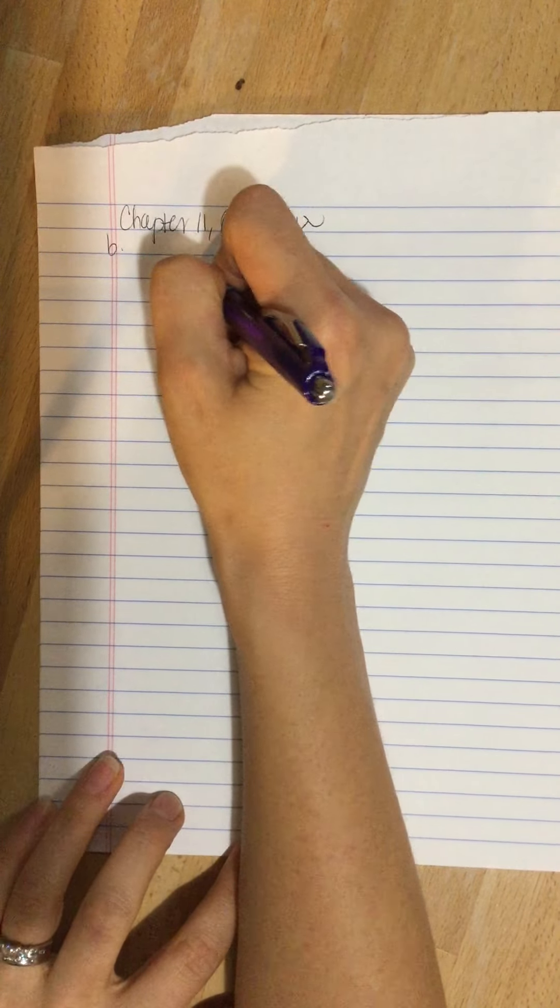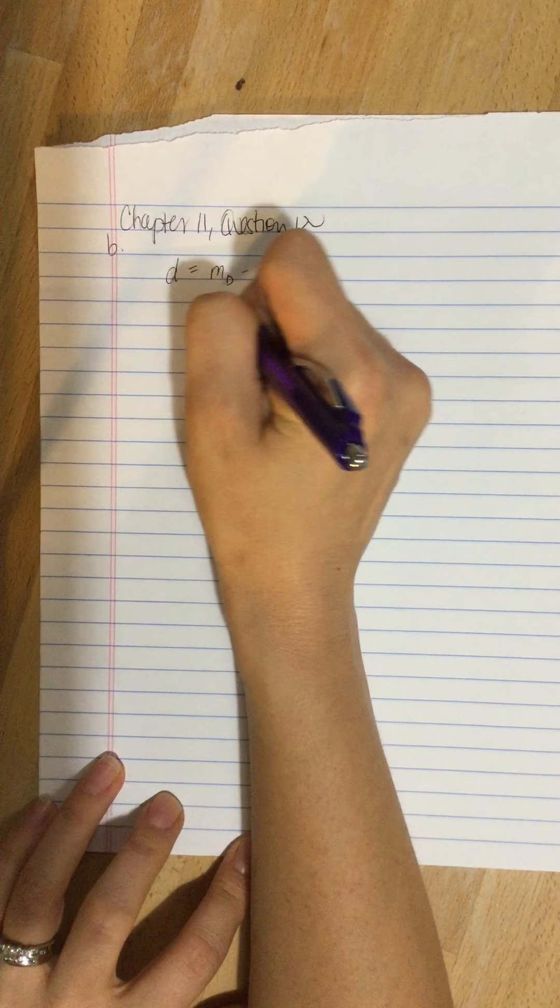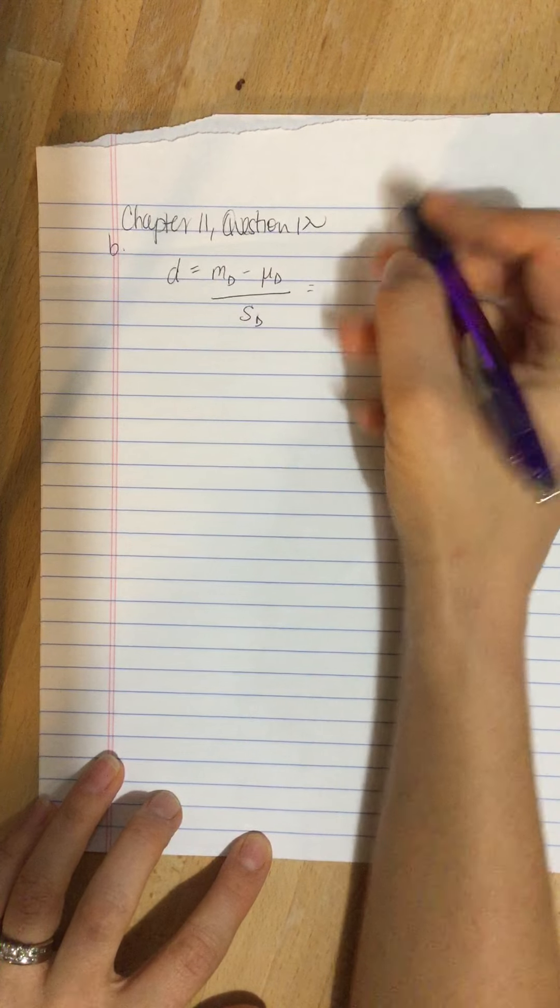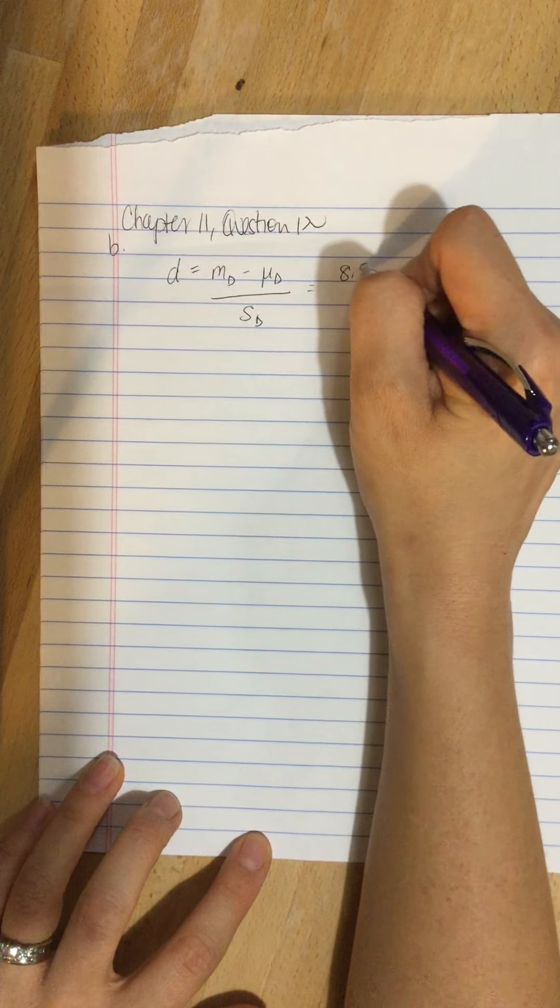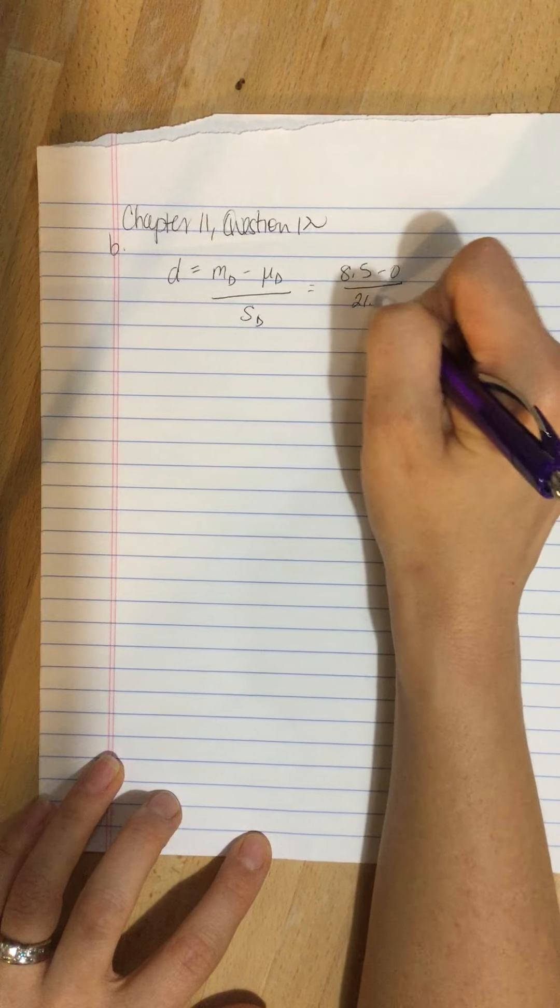Cohen's d is md minus mu d divided by the standard deviation. So our difference was 8.5 subtract 0 divided by 21.5.